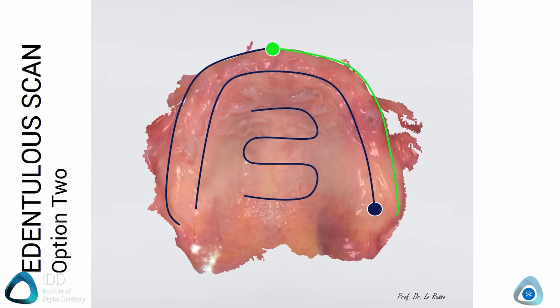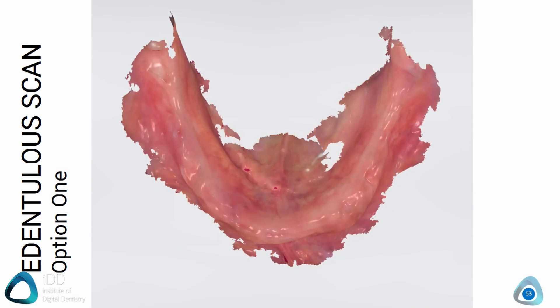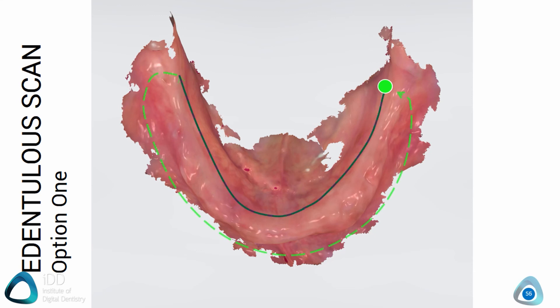Which protocol you use will come down to the operator and simply what works in your hands. With the lower arch, there are obviously no rugae, so we are again limited in the choice for good reference points. The best area to start the scan is the retromolar pad. Starting here, you will likely need an assistant to help retract the tongue, especially in cases with severe bone resorption. Build up the scan by moving the scanner along the alveolar ridge until you reach the retromolar pad on the opposite side, then scan the buccal and labial aspects including the vestibule and the frenum.